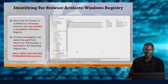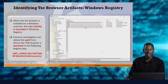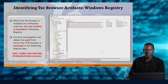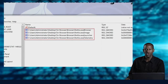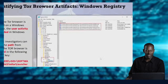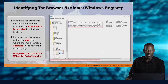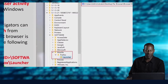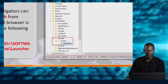Now we look at artifacts in the registry. We go to HKEY_USERS, find the SID of the user, and under Software > Mozilla > Firefox Launcher, we look for the path. Zooming in, we can see it says Tor Browser — for example, User > Administrator > Desktop > Tor Browser > Browser > Firefox, and so on. The path you follow is under the SID, under Software and Mozilla, and we can find the Tor browser and extract that information.